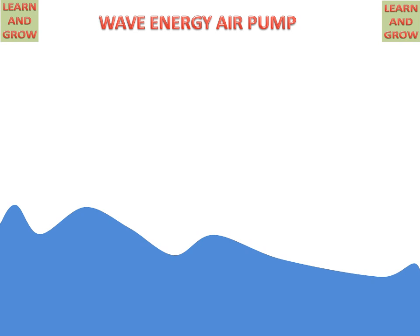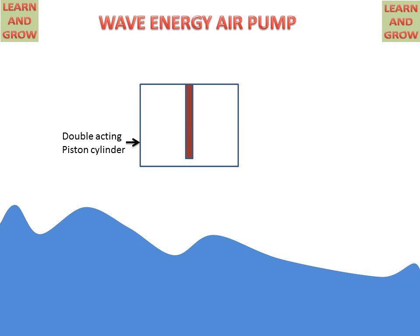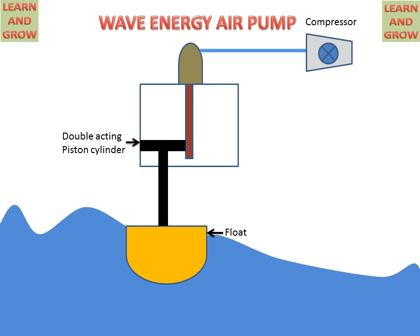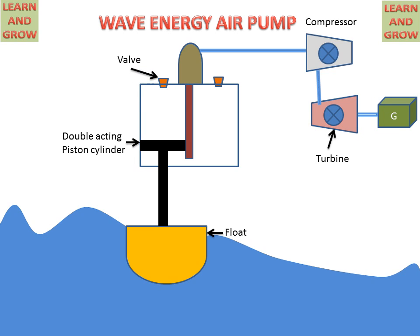We have sea waves and a double acting piston cylinder. A float is attached to a piston with the help of a piston rod. This double acting piston cylinder has two parts, with an empty space between the two cylinders. There is a discharge valve, which is connected to a compressor. The compressor is then connected to a turbine for creating electricity, and the turbine is connected to a generator. There are two valves for inlet of air into the cylinder.